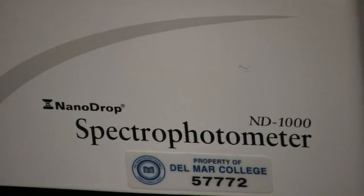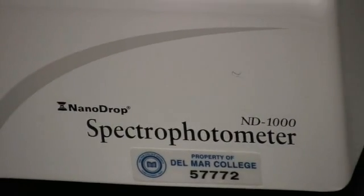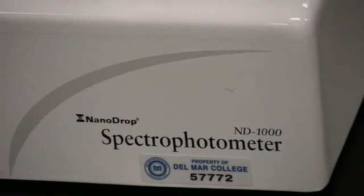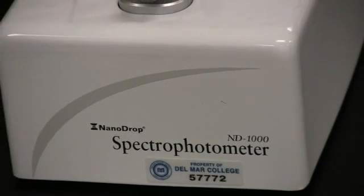The Nanodrop 1000 is a type of spectrophotometer, a tool used in quantifying nucleic acids, DNA and RNA, as well as certain proteins.